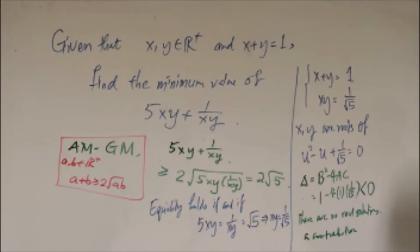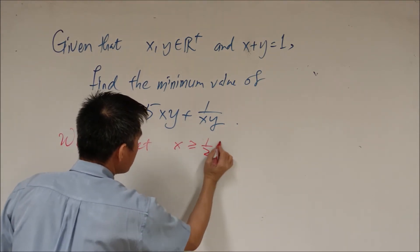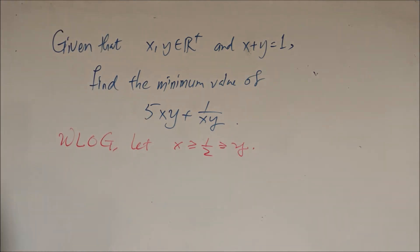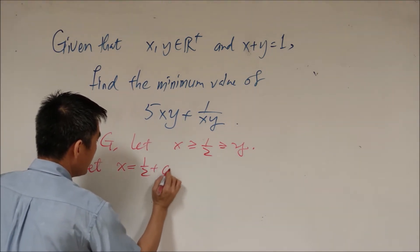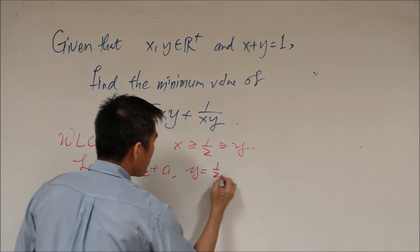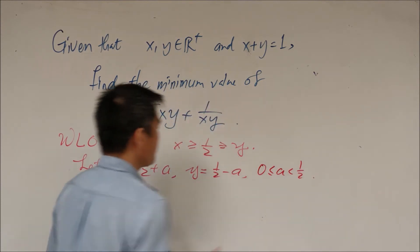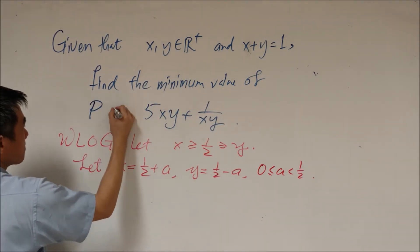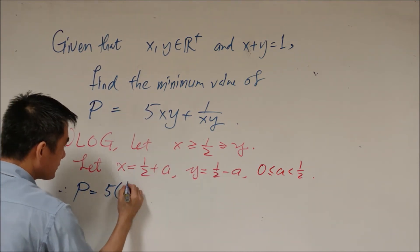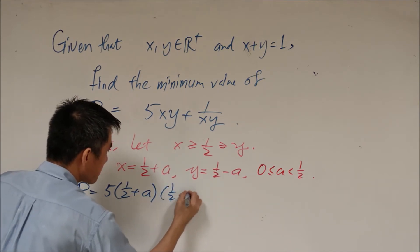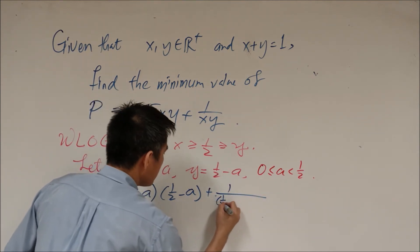So how do we solve it? Without loss of generality, let x be greater than or equal to y, with x greater than one half. Let x equal one half plus a and y equal one half minus a, where a ranges from 0 to one half. We set the expression p equal to 5xy plus 1 over xy.